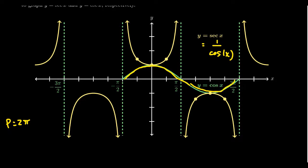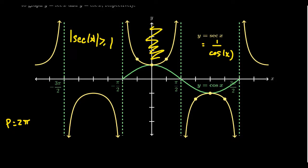Because secant is the reciprocal of cosine, their graphs are in some sense opposites of each other — when cosine is small, secant will be big, and when cosine is big, secant will be small. Cosine is bounded between 1 and negative 1, which means secant actually avoids the interval from negative 1 to 1. The absolute value of secant is always greater than or equal to 1: an up bucket means you're greater than or equal to 1, and a down bucket means you're less than or equal to negative 1.